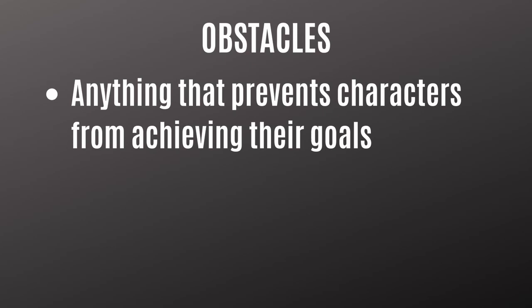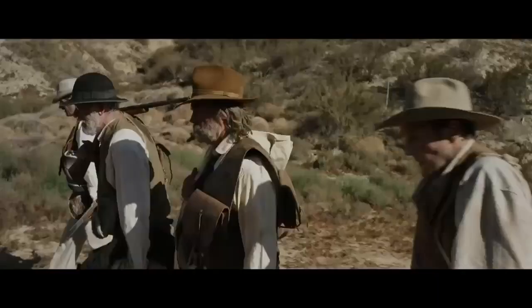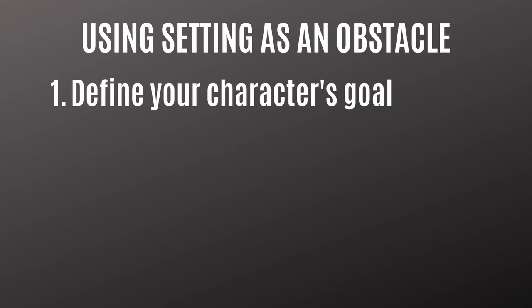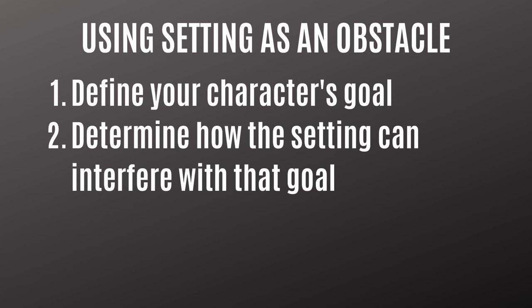Now let's talk about how to use the setting as an obstacle. There's a three-step process. First, define your character's goal — what do they want? Second, determine how the setting can interfere with that goal. You have to use your brain and come up with creative ideas. Know your setting, know what it's capable of, know who's in charge of it, or whether the villains designed it. Ask yourself: how can I use this setting to get between the character and their goal?